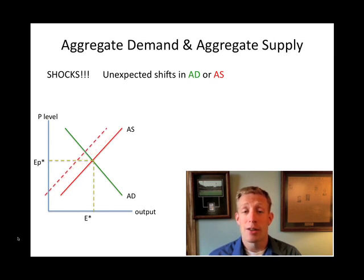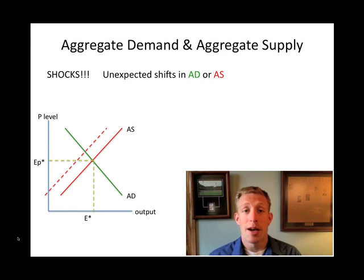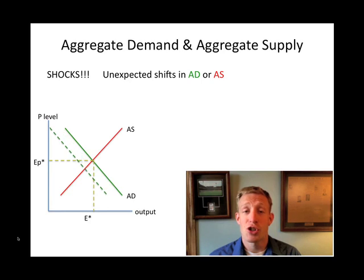On the demand side, big changes can happen from things like immigration or terrorism — unexpected changes that affect people's desire or ability to buy or sell. These are known as shocks to the economy.